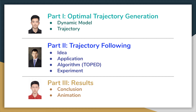The third part is some conclusions and animation. Now Junhao is going to present the first part of the project, which is to generate an optimal trajectory using some different techniques.